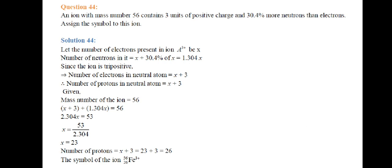Since the ion has a 3+ positive charge, the number of protons = x + 3. Mass number is 56, so (x + 3) + 1.304x = 56, giving 2.304x = 53, so x = 23. Number of protons = 23 + 3 = 26. The element is Iron, so the symbol is ₂₆Fe³⁺ with mass number 56.